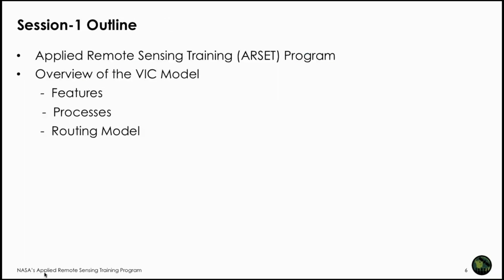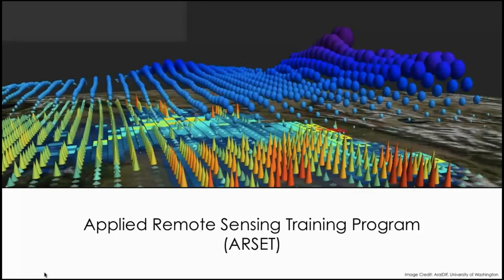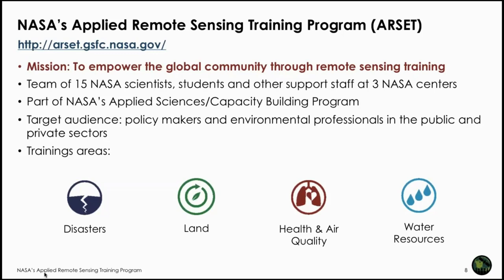Session one outline for today: first, we will briefly go over the Applied Remote Sensing Training Program, and then Kale will talk about an overview of the VIC model, including its features, processes, and a routing model that is used along with VIC. ARSET is a capacity-building program supported by NASA's applied science program. ARSET's mission is to empower the global community through remote sensing training, targeting environmental professionals and policy makers in public and private sectors.